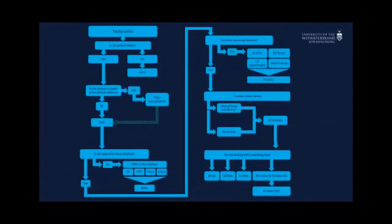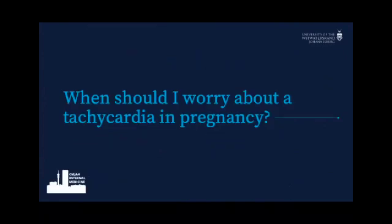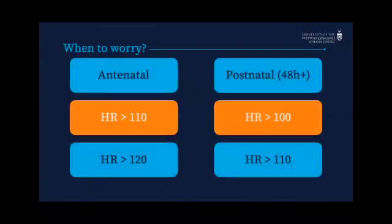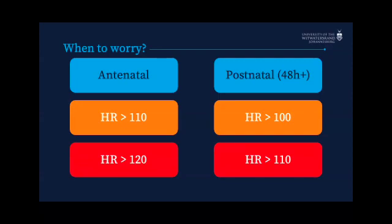That's the complete algorithm — a nice approach to take when called to see a patient with tachycardia, going through most of the major causes. When should you worry? Antenatally, if the heart rate is above 110, or postnatally above 100, walk across to see the patient. If it's above 120 antenatally or above 110 postnatally, walk fast — or run. If the heart rate is that high, go across.